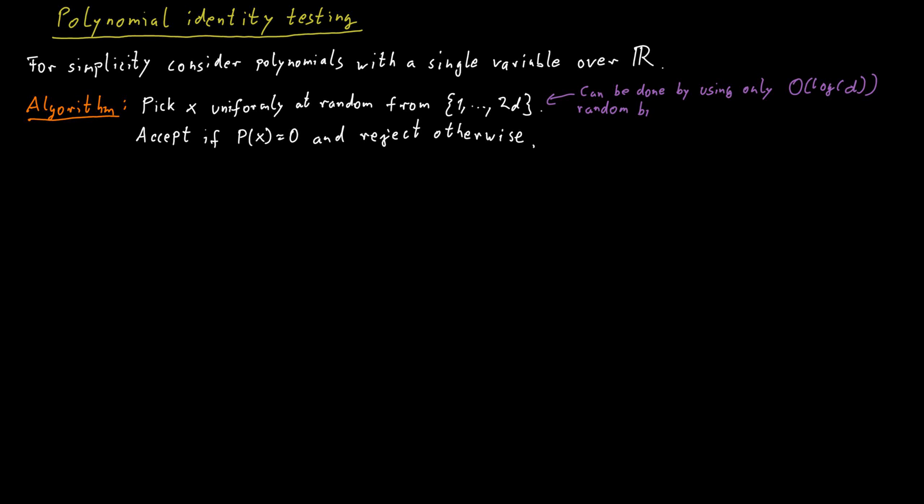And because d has to be written somewhere in our input, it has to be a number that is encoded in binary as well. So our input must contain at least log d many bits. So the number of random bits we need here to generate is in the order of the size of the input. So this is all fine.